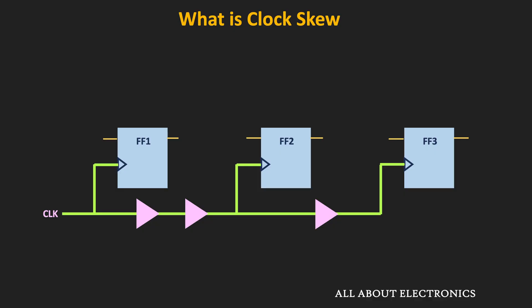Clock skew is specifically a problem in synchronous digital circuits because synchronous circuits rely on a common clock signal for operation. If the clock signal arrives at one part of the circuit too early or too late relative to another part, it can lead to errors in circuit operation.